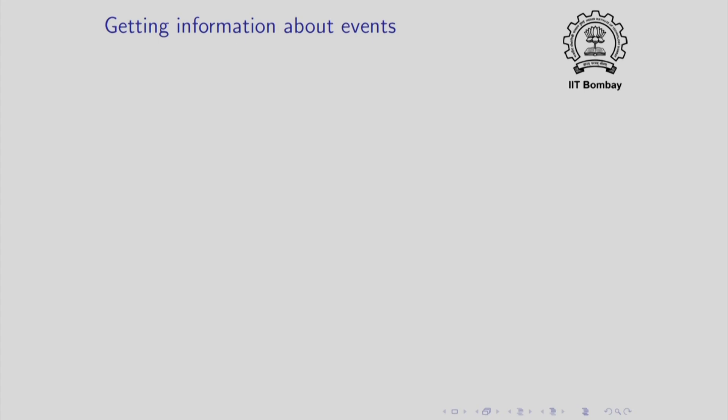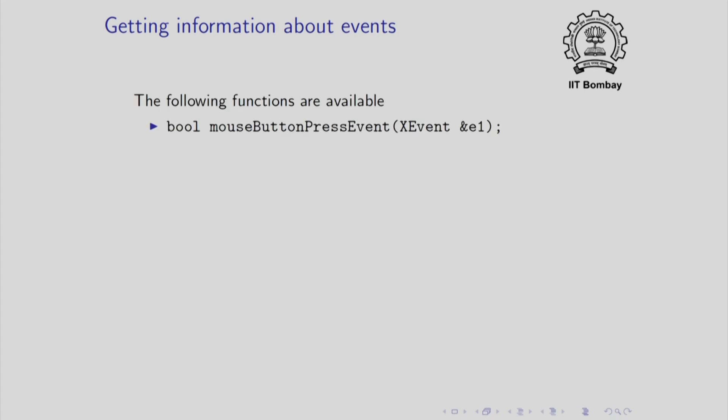You can get information about what event has happened by executing functions on that event object. For example, if you call mouse_button_press_event on event E1 — and note the event is passed by reference, so these event objects are never copied — this function call will reveal whether that event is in fact a mouse button press. If it is indeed a mouse button press, this function returns true. So this function returns true if E1 involves some mouse button being pressed.